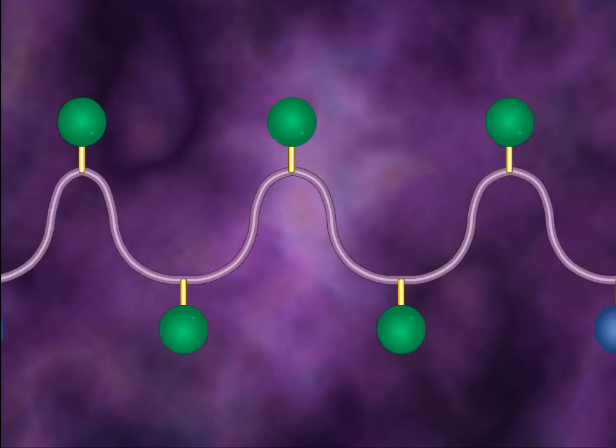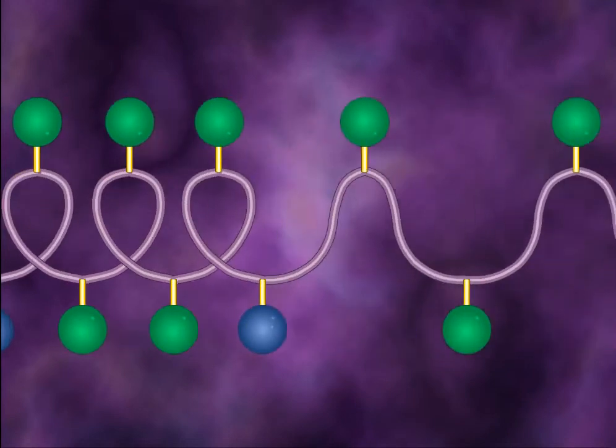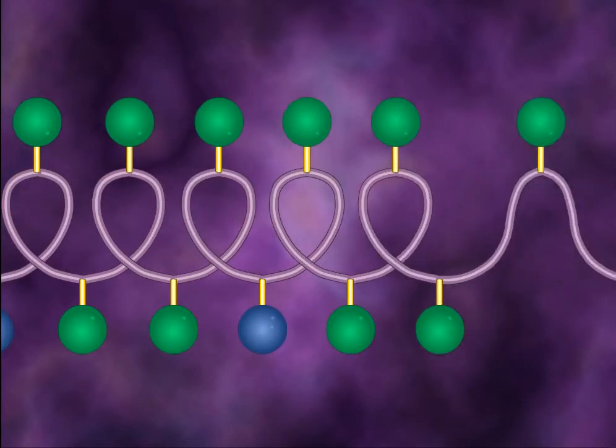Secondary structure is the helix that the protein chain curls into as a result of hydrogen bonds and other weak forces.